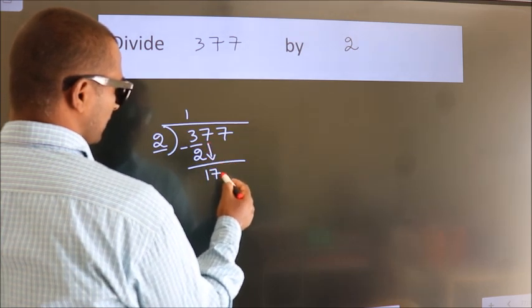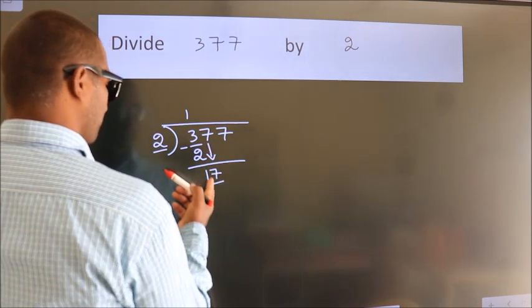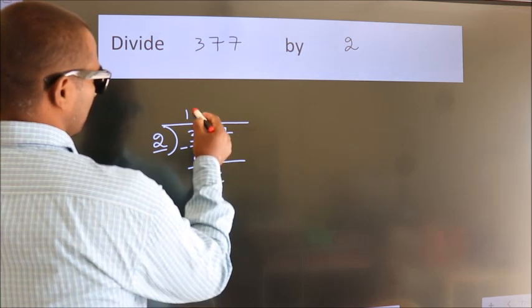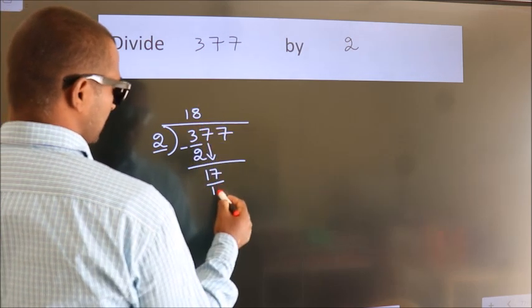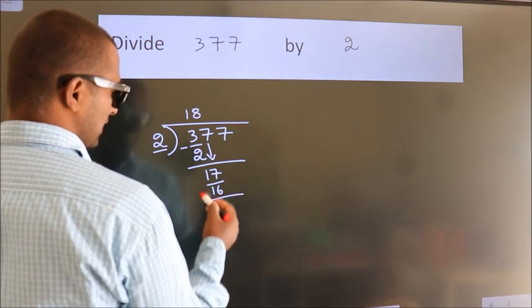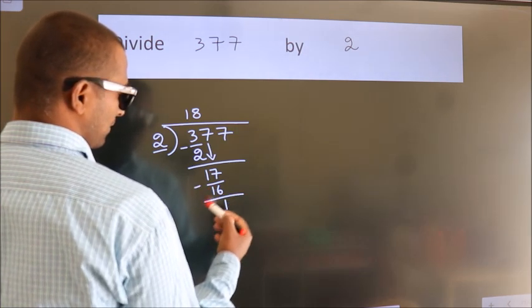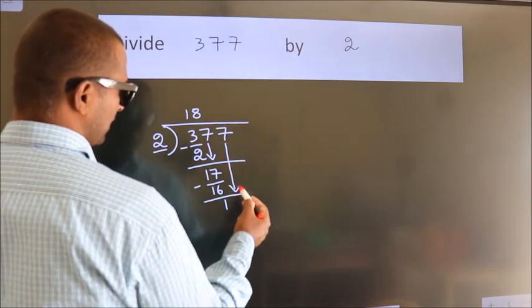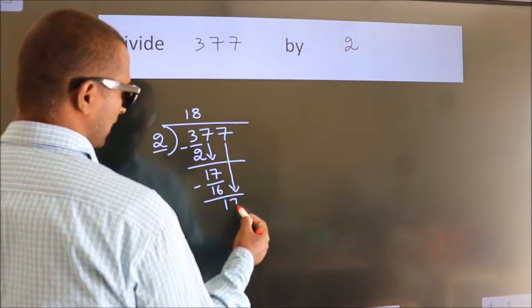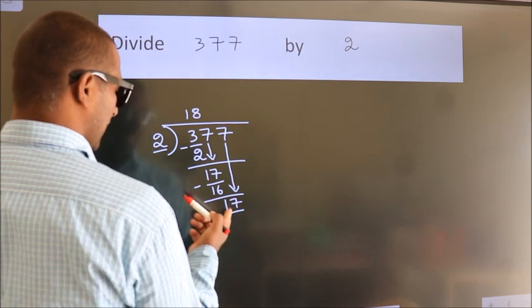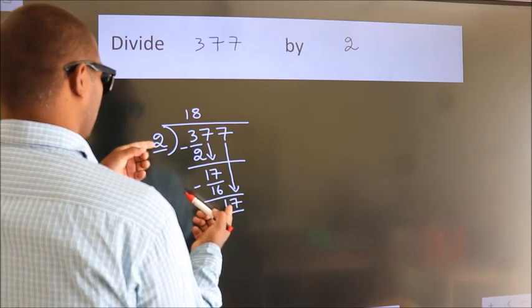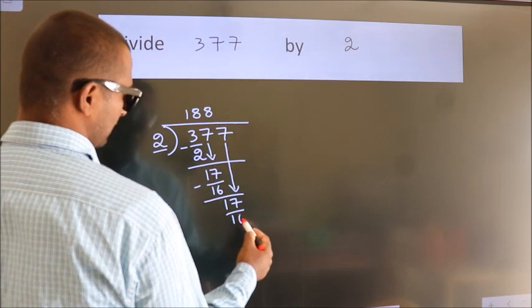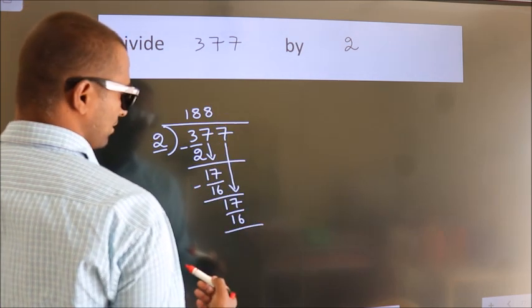Bring 7 down, so we have 17. A number close to 17 in the 2 times table is 2 times 8 equals 16. Now we subtract, we get 1. After this, bring down the beside number — 7 down, so 17 again. A number close to 17 in the 2 times table is 2 times 8 equals 16. We subtract, we get 1.